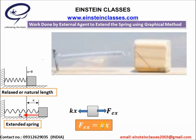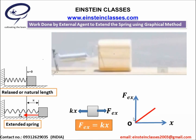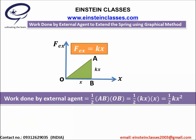We are going to draw the graph of the force applied by the external agent. This graph represents the variation of the force applied by the external agent with the position x of the block. The work done by the external agent to extend the spring by an amount x, or to displace the block by an amount x, is given by the area of this triangle. The area of this triangle is half times ab times ob, where ab equals kx and ob equals x. Hence, the work done comes out to be half kx squared.